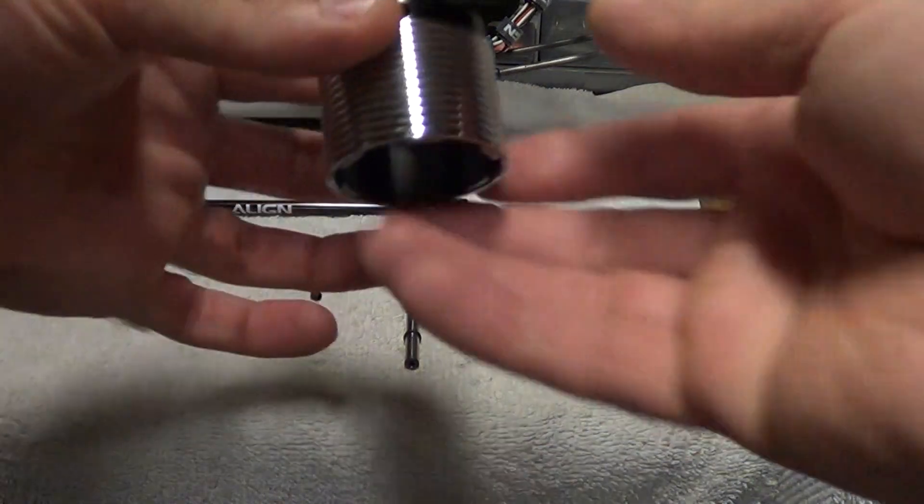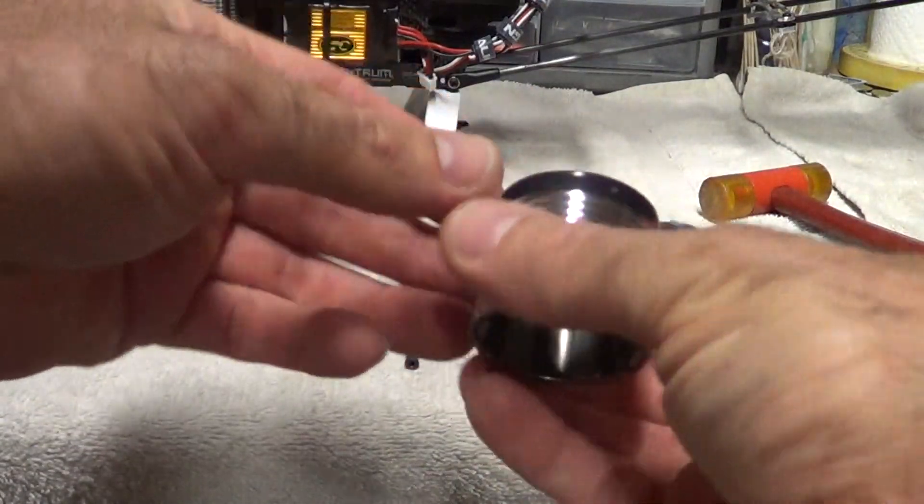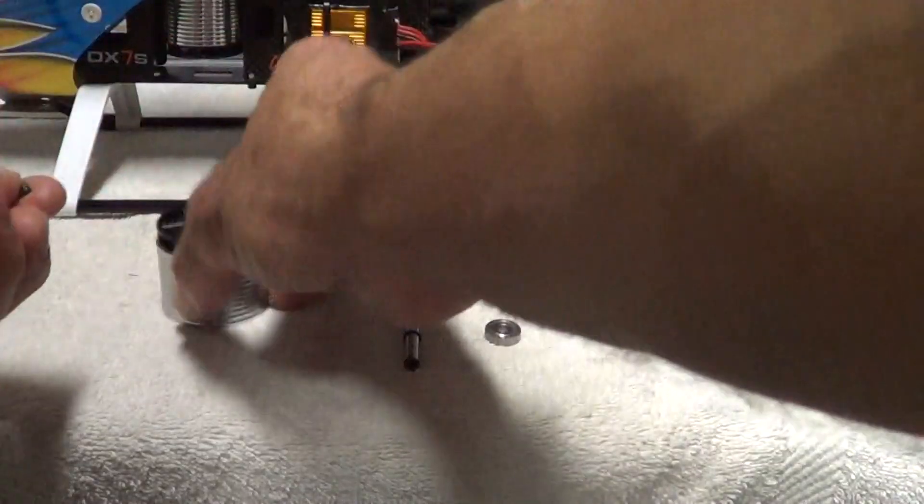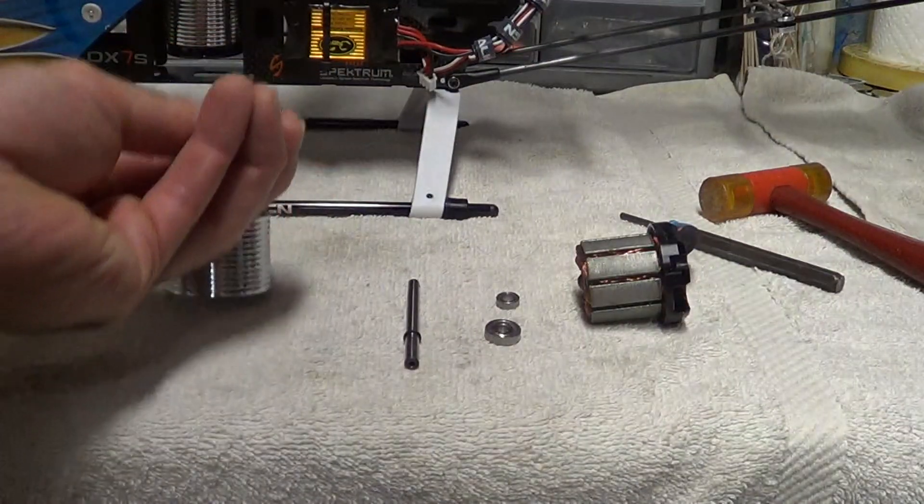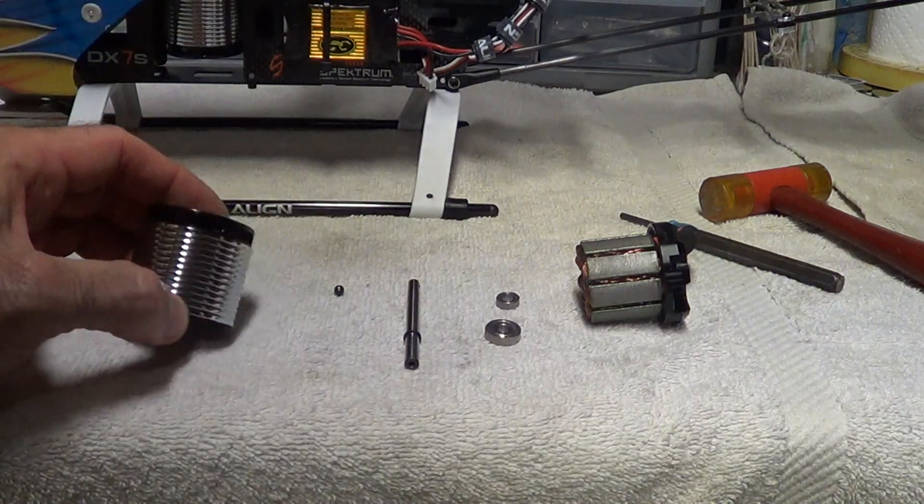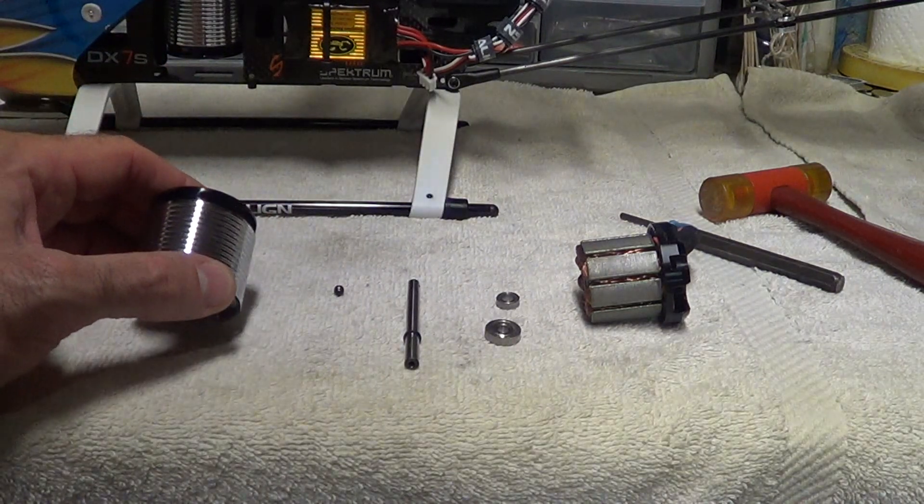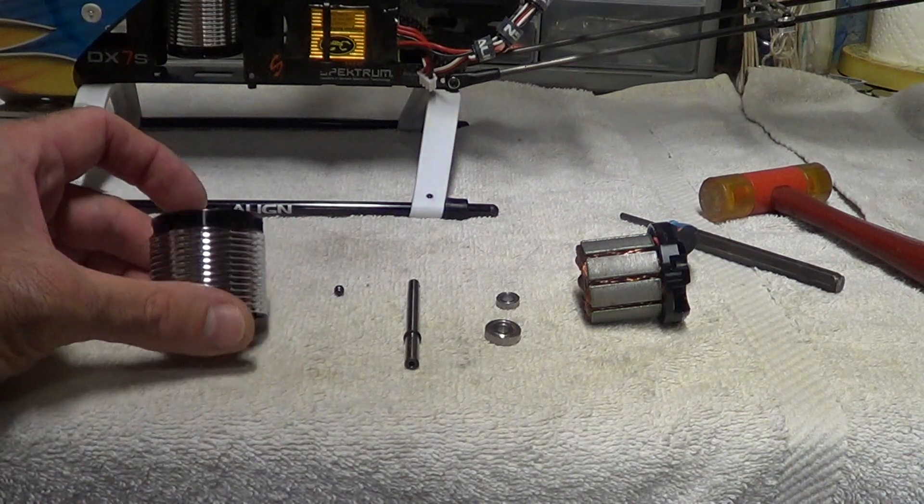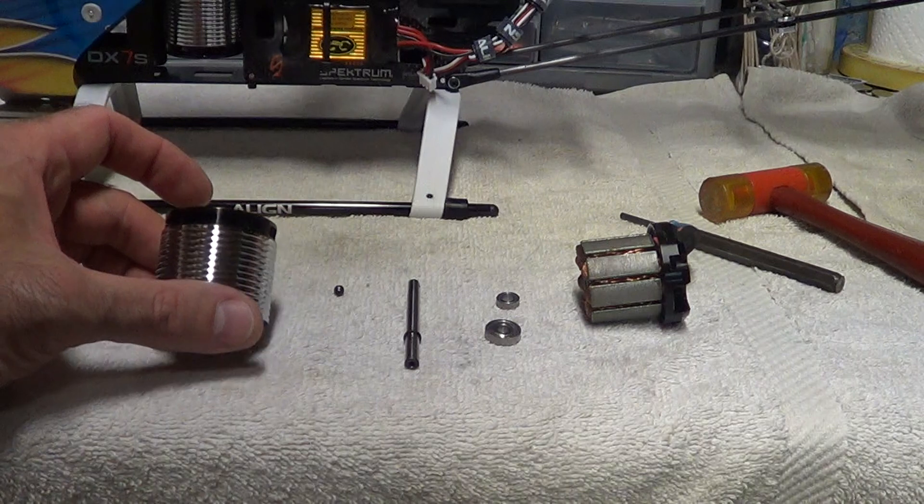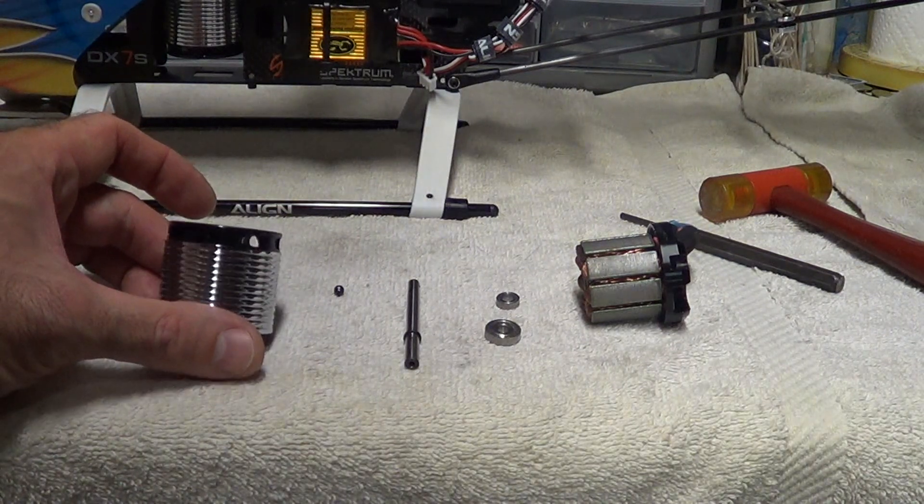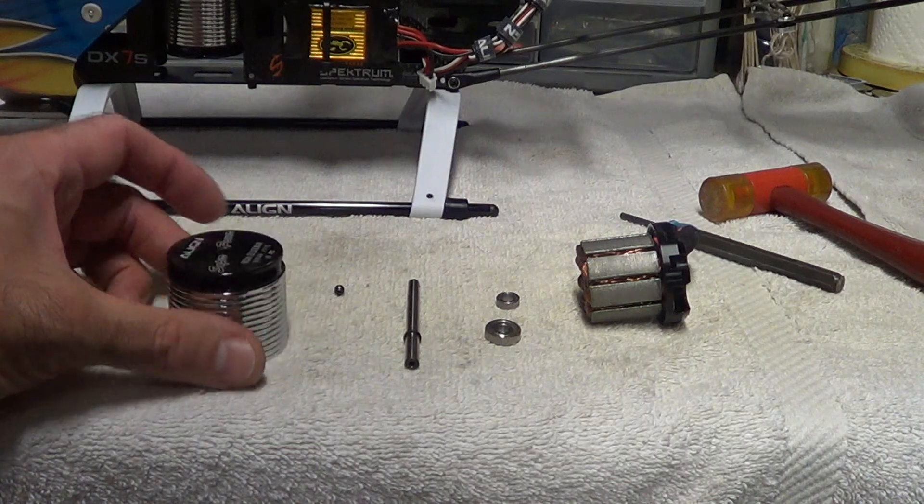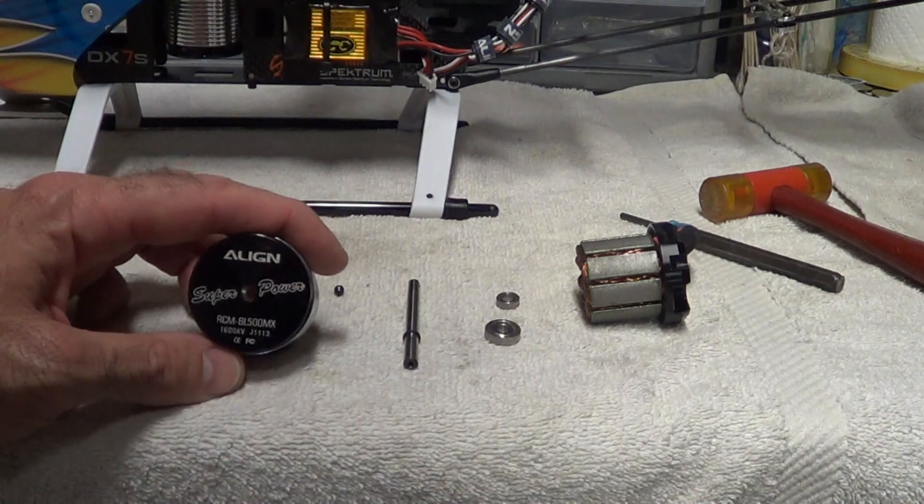The first thing you want to do is look inside here and you'll see the set screw. That's the first thing you got to take out. When you're taking it out, it's not a big deal because you're taking the motor apart anyways. But 99% of the time when you're trying to pull that out, it gets sucked onto the magnet. Not a big deal when you're taking it apart, but it can be a pain when you're putting it back together.